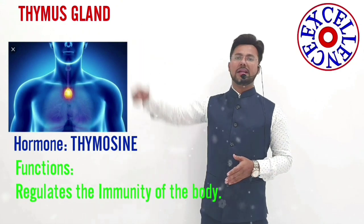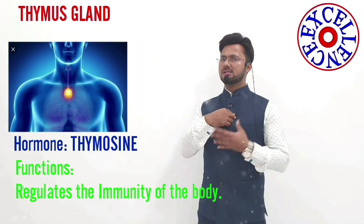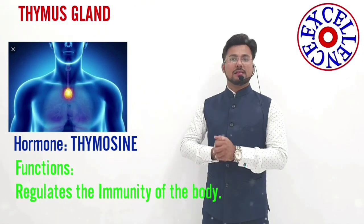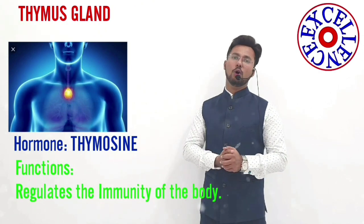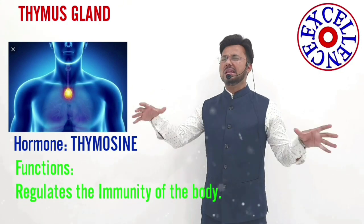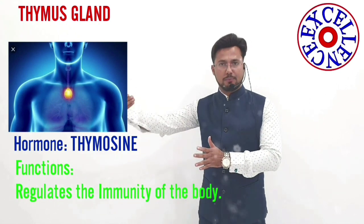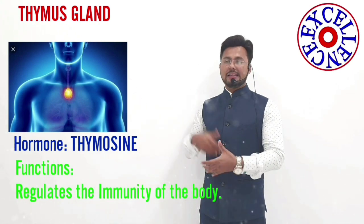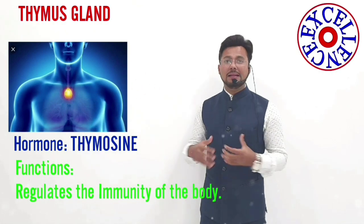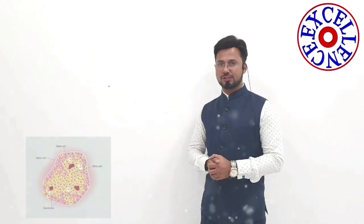The next gland is the thymus gland, situated in our thorax just behind the trachea. This thymus gland releases a hormone called thymosine, which is primarily concerned with the enhancement of the immune system of our body. It increases the defense mechanism of the body and provides the ability to fight against pathogens and infections.